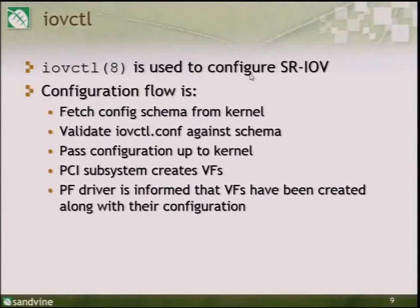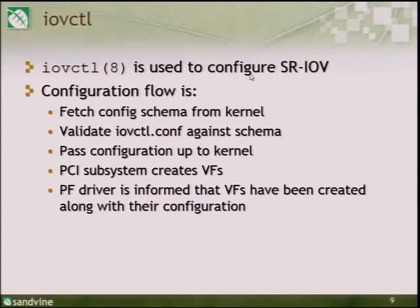The PCI subsystem creates the virtual functions, then the infrastructure passes the configuration down to the PF driver to do the device-specific steps to bring up the VFs. Creating the VFs doesn't really do anything until the PF driver has actually allocated resources to them. In the Fortville example, you have to create a virtual switch interface — essentially a virtual port on the switch embedded in the Fortville — and allocate queues. That's all very device-specific and has to be done through the PF driver.